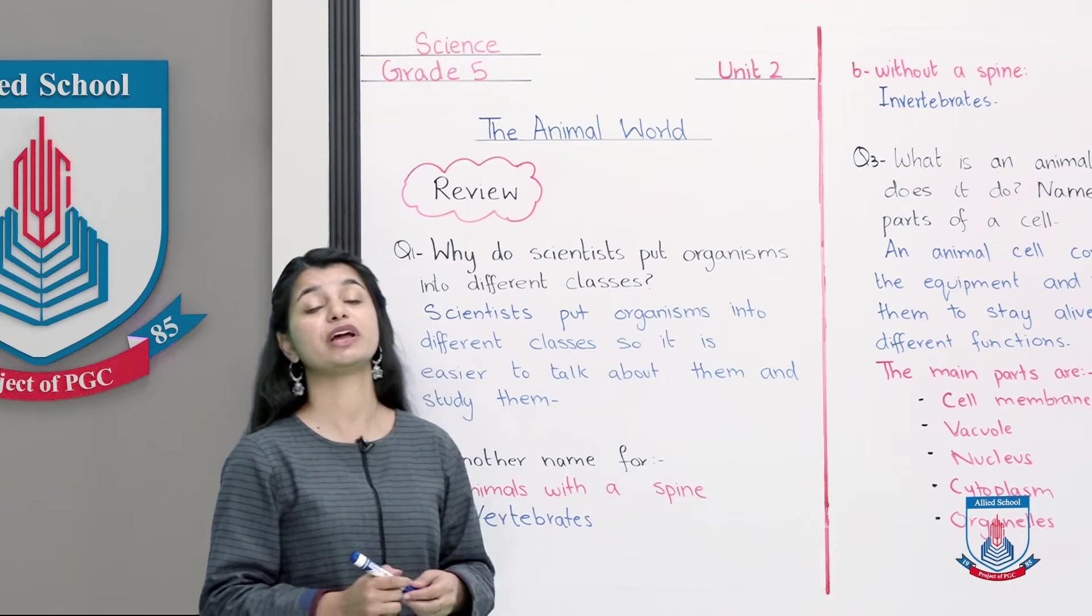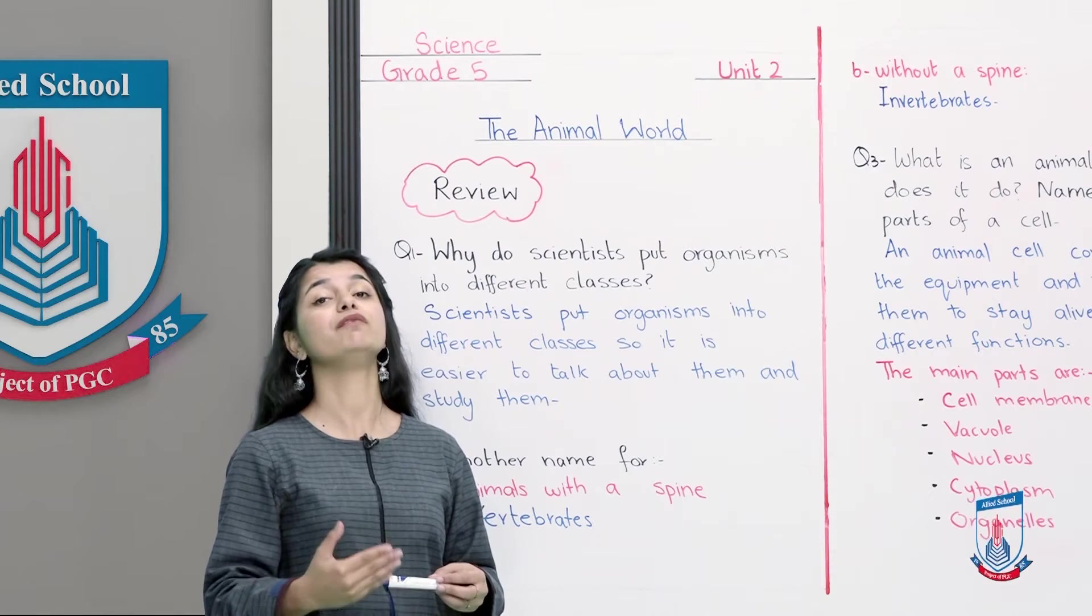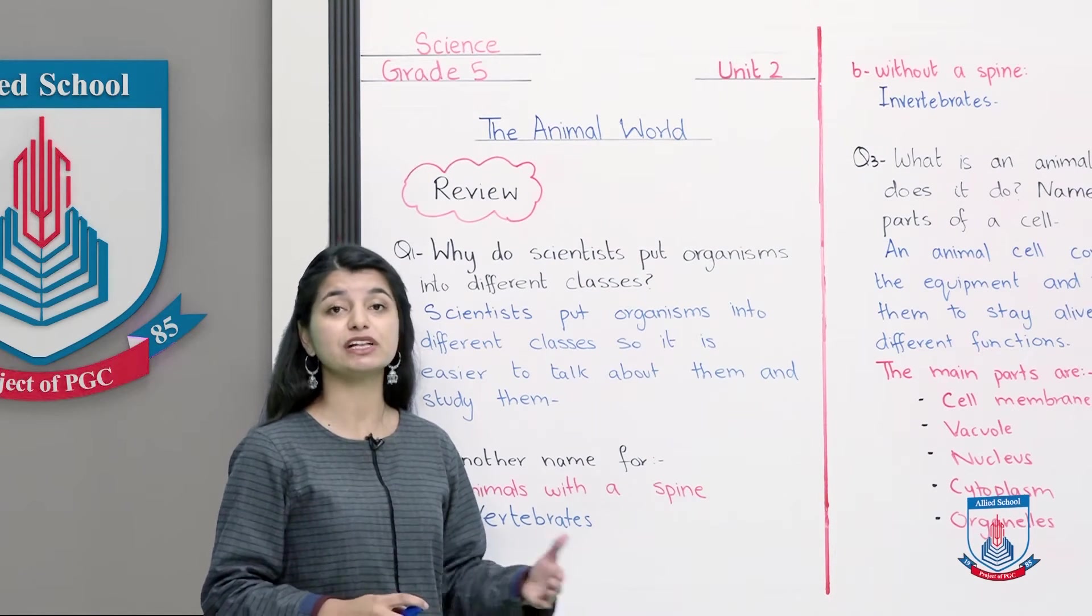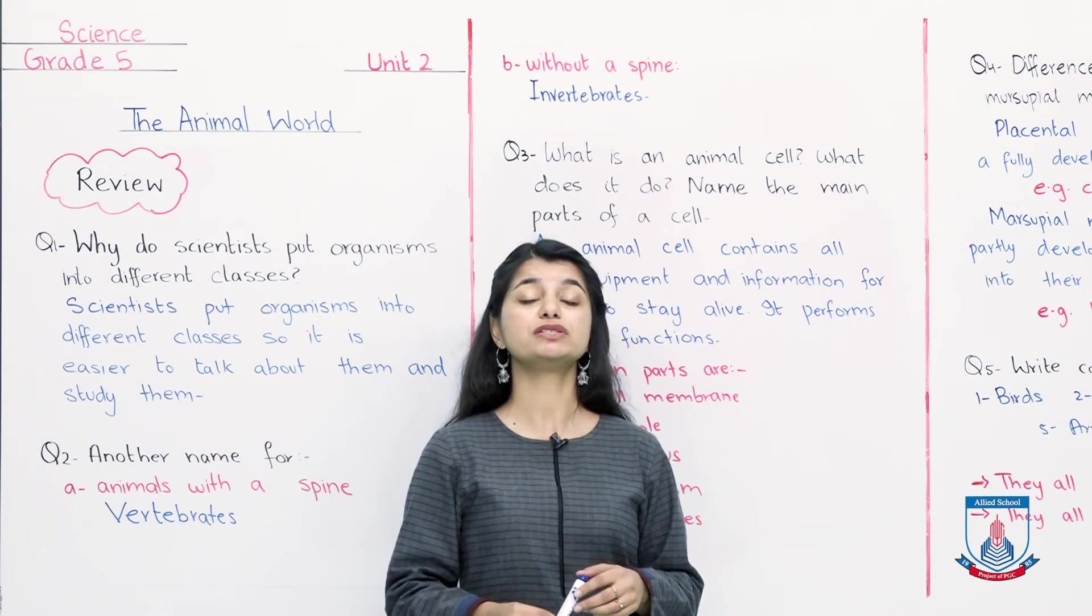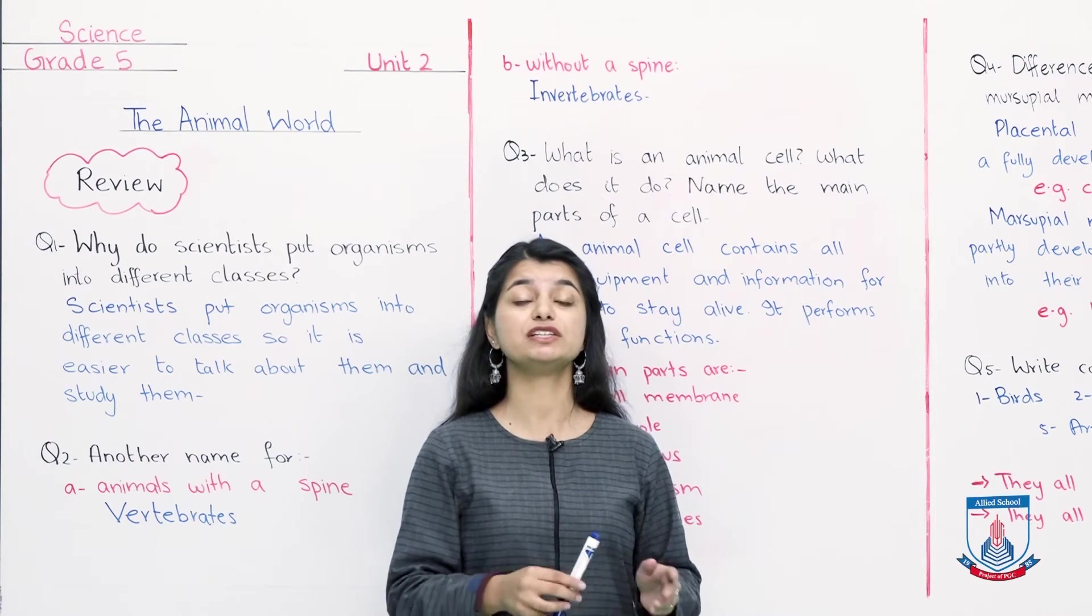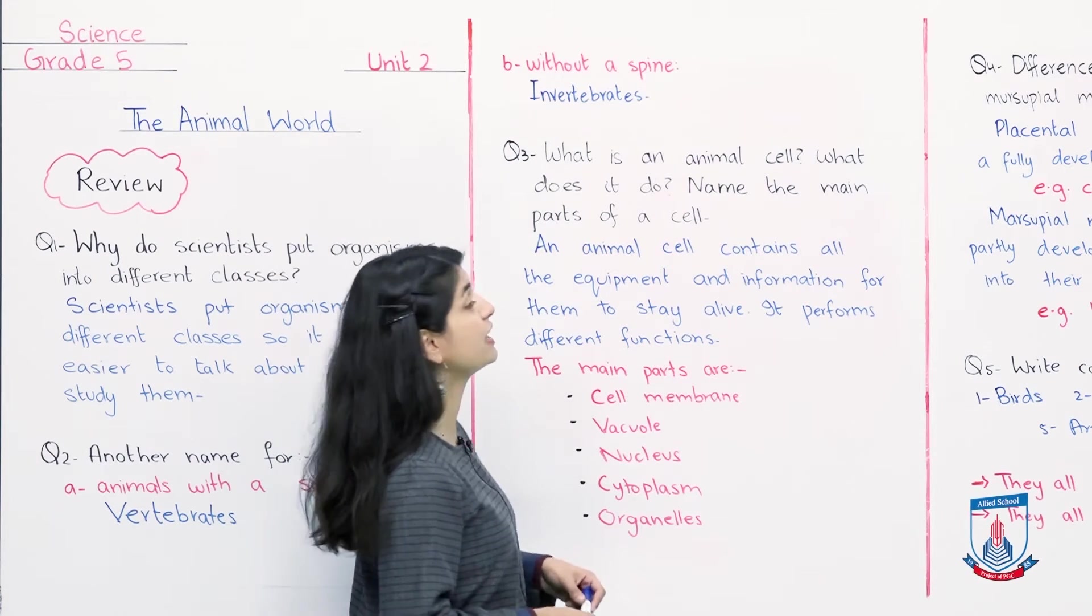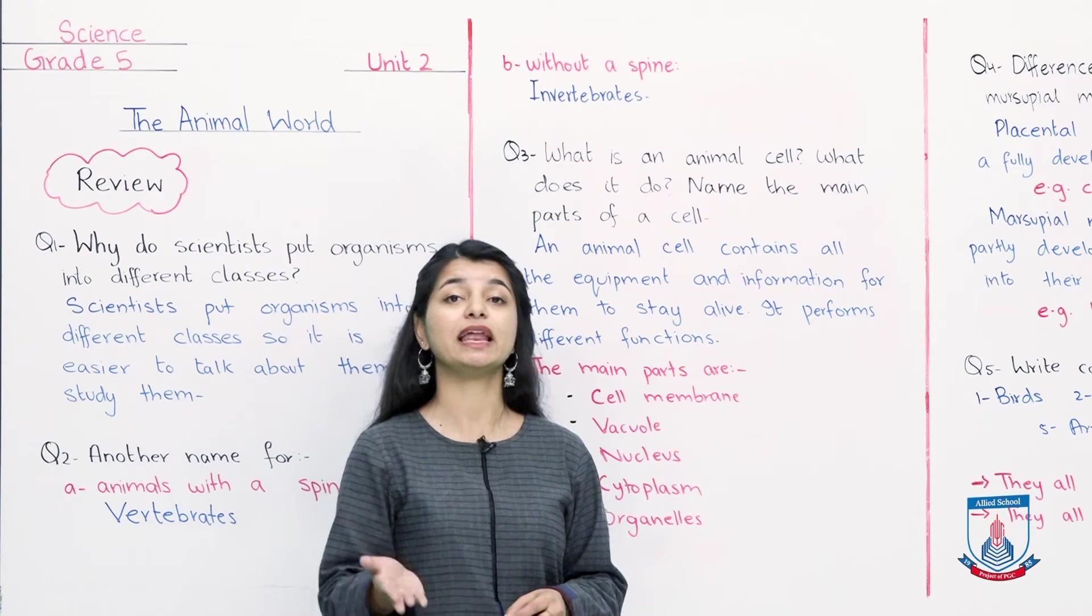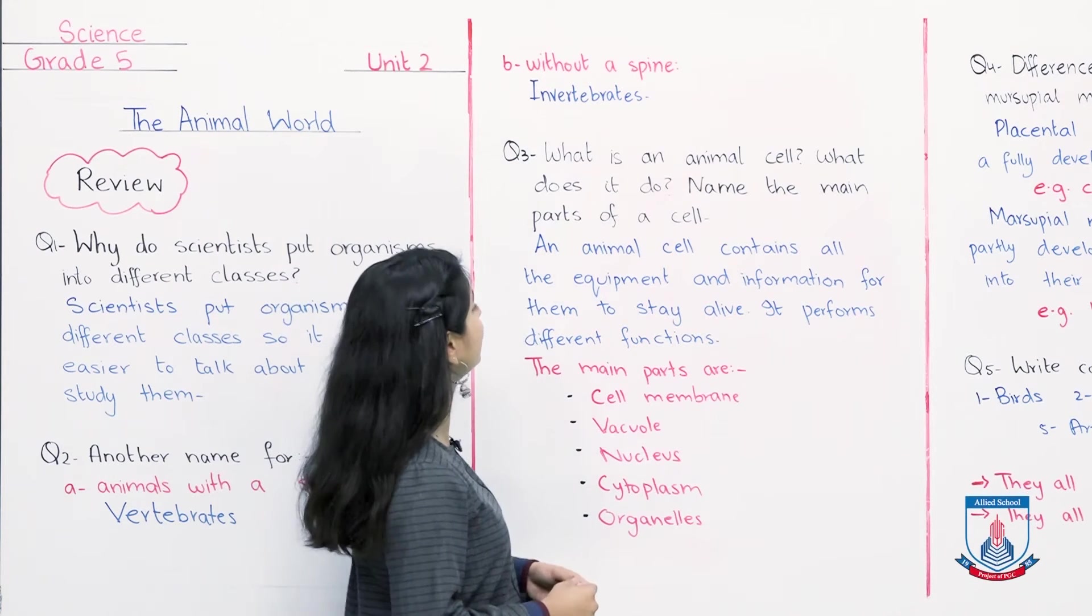Vertebrates were all the animals whose spine or backbone exists, but on the contrary, invertebrates were all the animals whose backbone or spine does not exist. So now you also have to answer which animals are without a spine. Here is also written without a spine and those are invertebrates. So obviously, if animals with a spine are vertebrates, then animals without a spine would be invertebrates. Well done, let's go ahead.